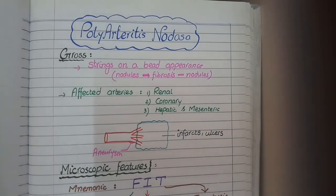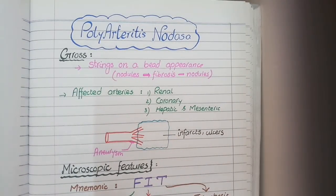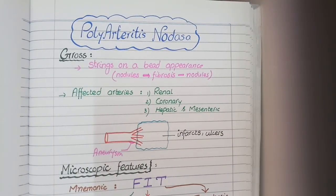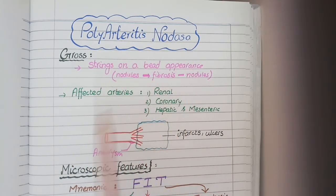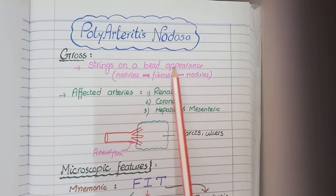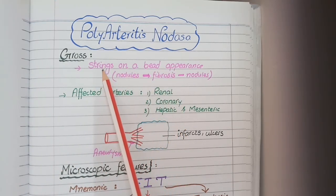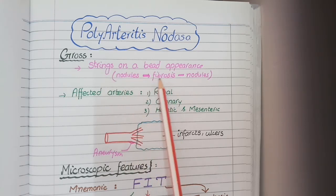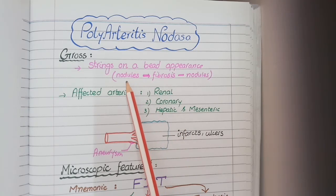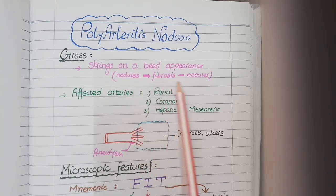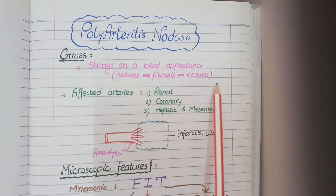Let's come to the pathological features of medium vessel vasculitis, which affects the medium-sized vessels supplying the organs. The first of these is polyarteritis nodosa, in which the characteristic gross feature is a strings-on-a-bead appearance of the vessel wall. The strings are the fibrotic part of the vessel wall and the beads are nodules, so you see alternating areas of nodule, fibrosis, nodule, fibrosis on the vessel wall.